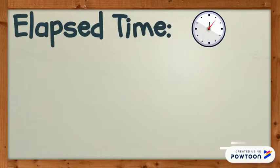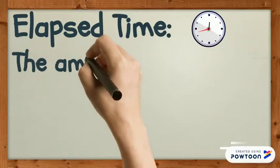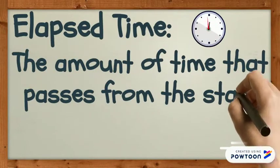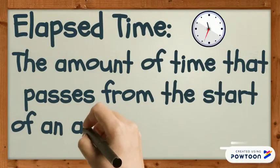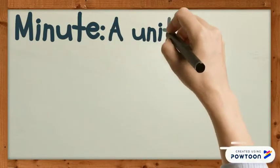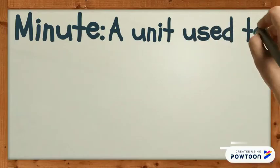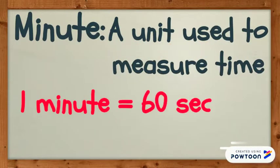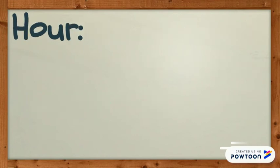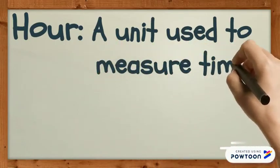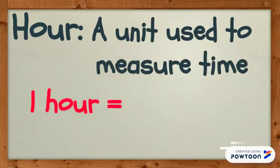Elapsed time is the amount of time that passes from the start of an activity to the end. A minute is a unit used to measure time — 1 minute equals 60 seconds. An hour is another unit used to measure time — 1 hour equals 60 minutes.